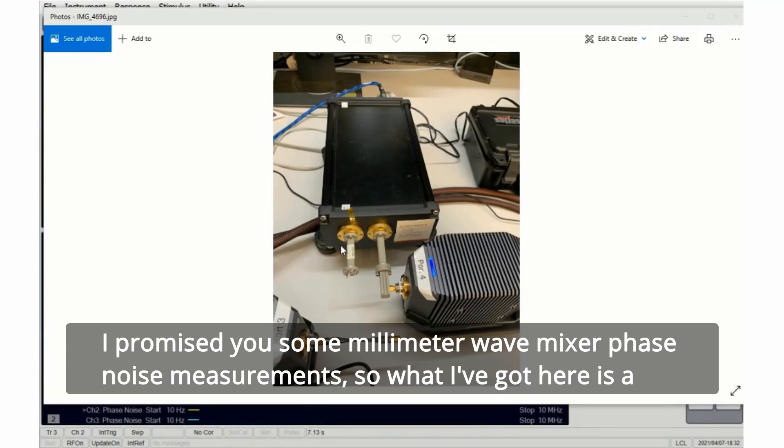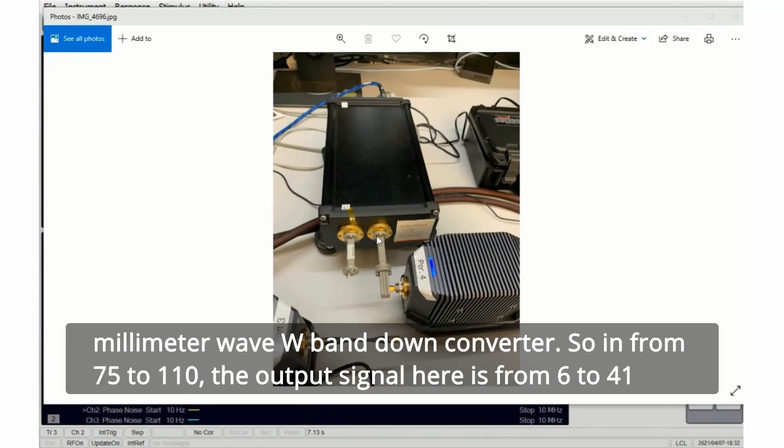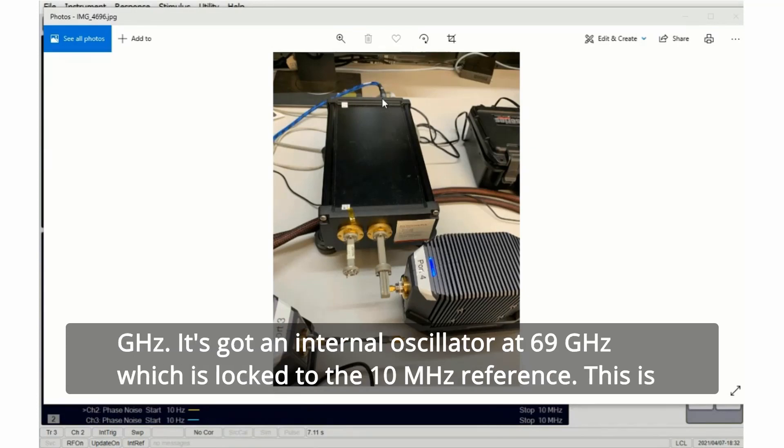What I've got here is a millimeter wave W band down converter. Input is from 75 to 110 gigahertz, the output signal here is from 6 to 41 gigahertz. It's got an internal oscillator at 69 gigahertz which is locked to the 10 megahertz reference.